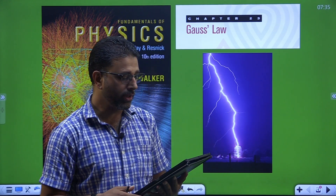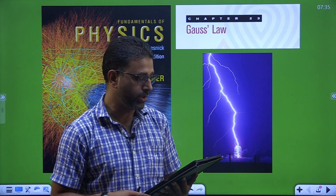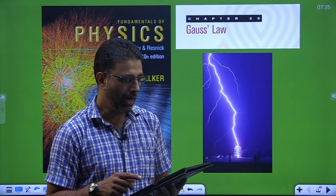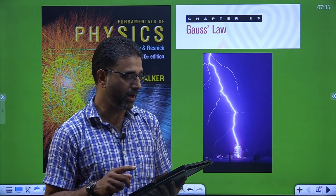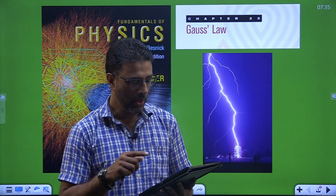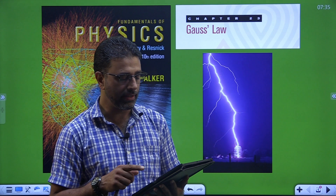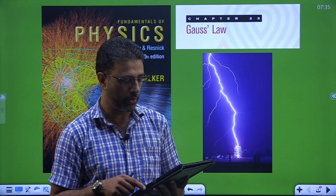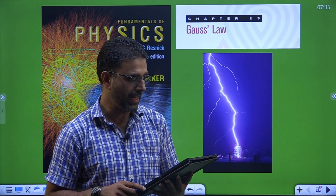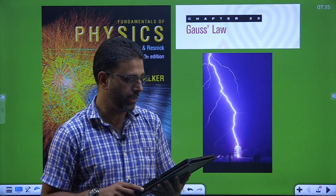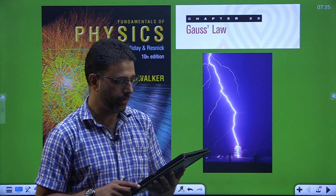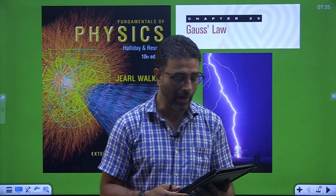Three infinite non-conducting sheets with uniform positive surface charge densities sigma, 2 sigma, and 3 sigma are arranged to be parallel. What is their order from left to right if the electric field E produced by the arrangement has magnitude E equal to 0 in one region and E equal to twice sigma by epsilon 0 in another region?